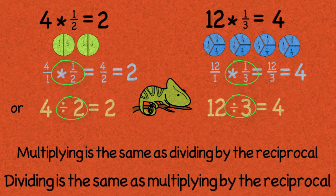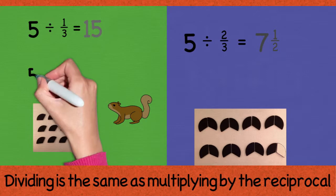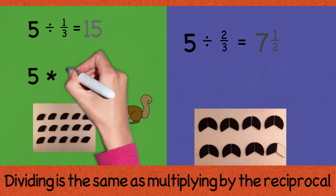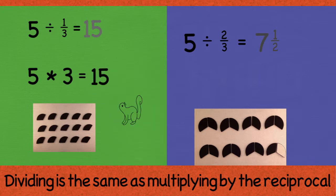Let's see if this process works for the problems we just did with the fraction tiles. 5 divided by 1 third. Well, if I took the reciprocal of 1 third, I get 3. So that would be 5 times 3. And I see in both cases I got 15.